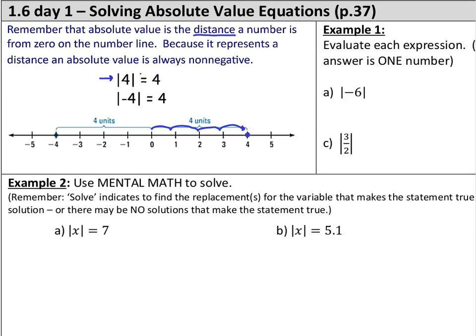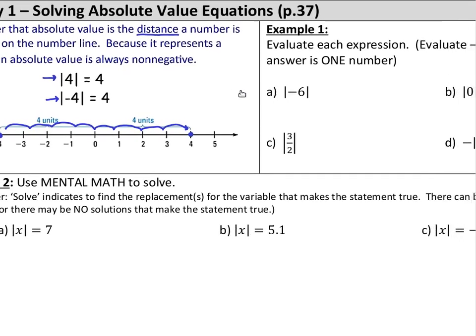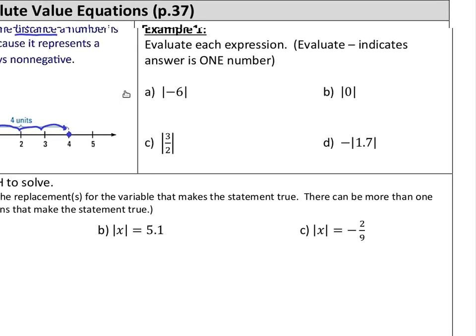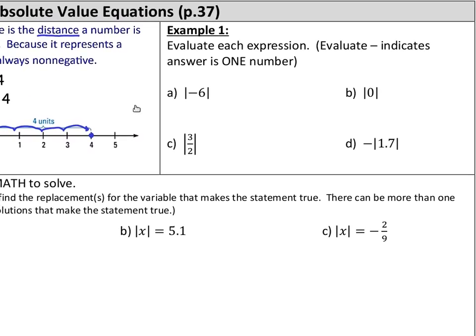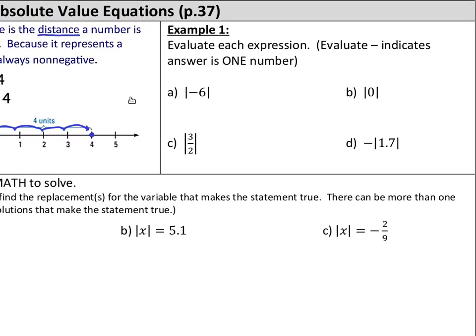What's interesting about absolute values is if there's just a number inside and we're not solving for what's inside, this number could also be negative, because we can also measure that distance on the number line to the left. The absolute value of negative 4 equals 4 as well, because to go from 0 to negative 4 on the number line would also be 4 units of distance. So we keep in mind that an absolute value could have a positive or negative inside.